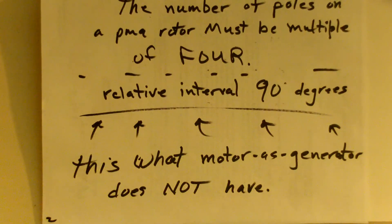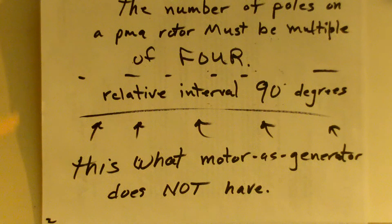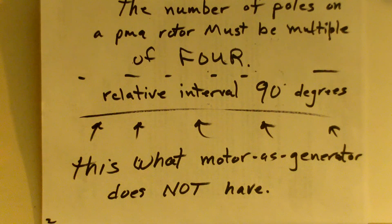The number of poles on the rotor must be a multiple of 4, so that there's a relative interval of 90 degrees between those poles, and that ain't inside any motor you can buy anywhere. It's got to be a machine that's optimized to function as a PMA, or purpose-made.